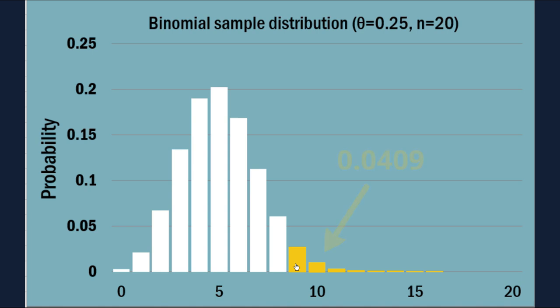So this yellow region here represents 0.0409, so almost 5% and that's probably going to be it for us. If we include this next bar, clearly that's going to put us over the top of 0.05. So our rejection region will be this yellow region here, which will go all the way to 20.